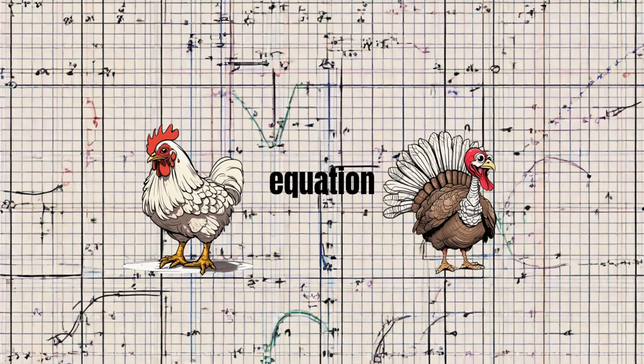Gotta get it precise, in this math equation, gotta roll the dice. Chicken times turkey in a trigonometry stance, when the moment's giving math a chance. Got the chicken's agility, the turkey's mass, combining together, it's a mathematical class. Sine theta, that's the key, gotta solve for the unknown.